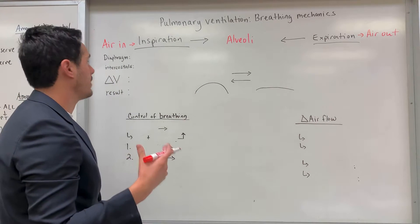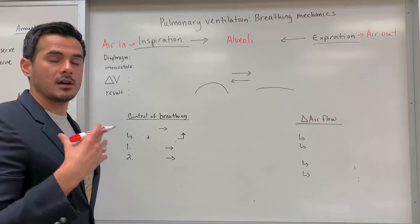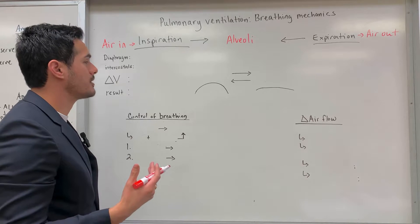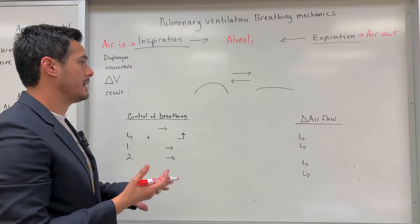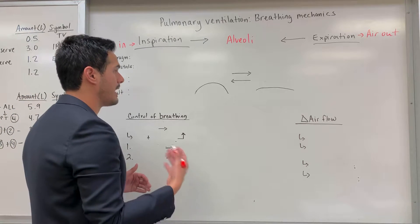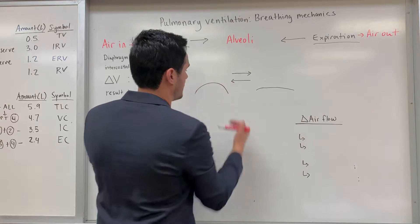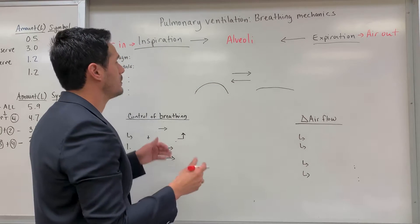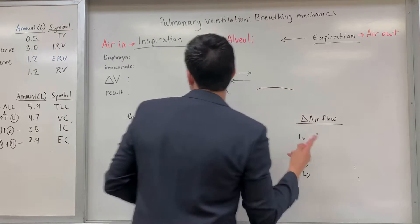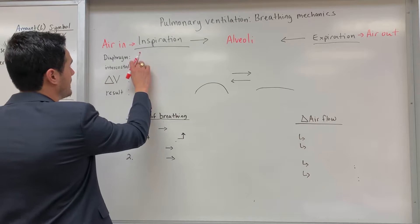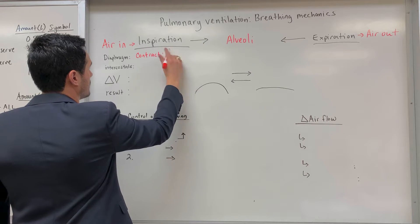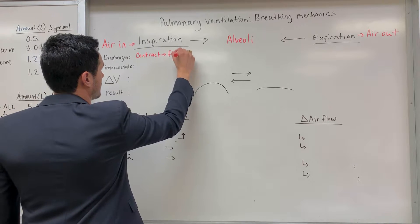The next thing I want to point out is the different components involved during the act of breathing. First off you have the diaphragm and then you also have the intercostals. When you're in the relaxed state the diaphragm is in a domed position, but once we inspire air the diaphragm is going to flatten — it's going to contract. During inspiration the diaphragm is going to contract, which will result in it flattening.